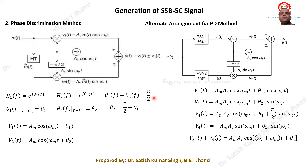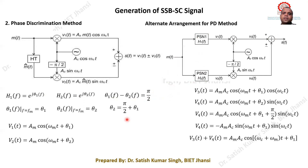This alternate arrangement for the phase discrimination method is popular and generally used because a single circuit cannot generate a 90° phase shift over a wide frequency range. By using two phase-shifting networks that maintain a constant 90° relative phase difference, we can successfully generate the SSB-SC signal.